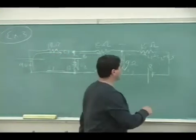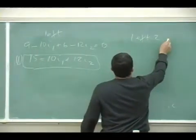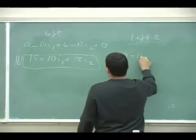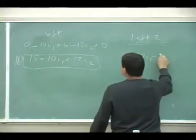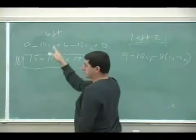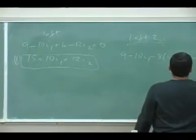9 minus 10i1. So left two, 9 minus 10i1 minus 8i1 minus i2, and then down the 9, negative 9i3 is equal to zero.